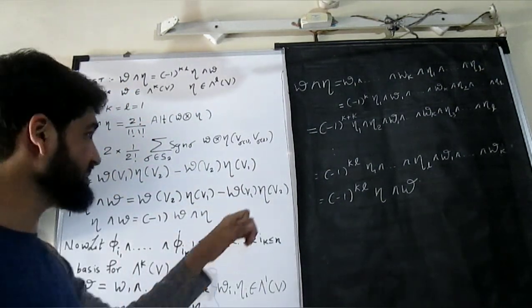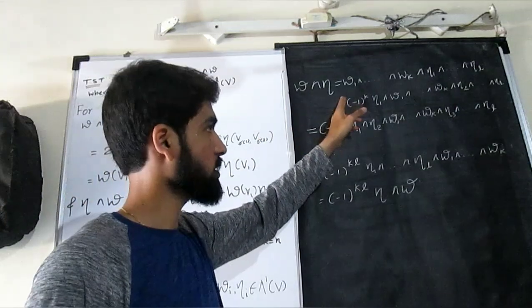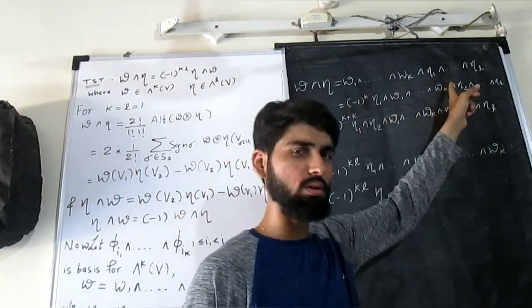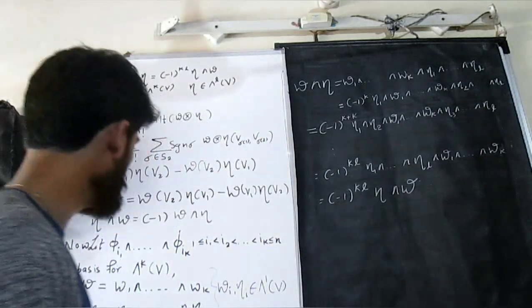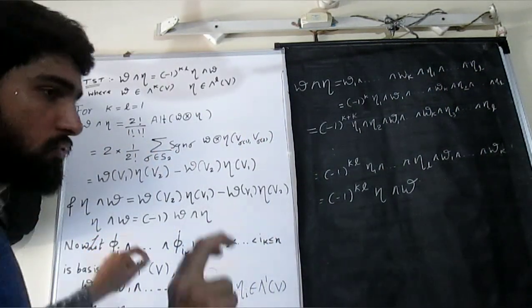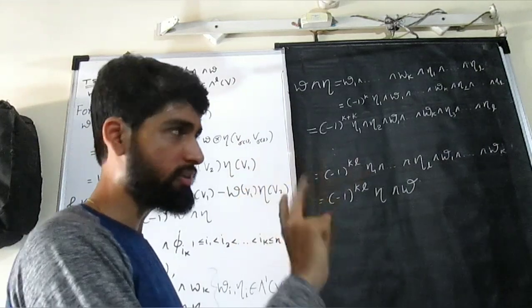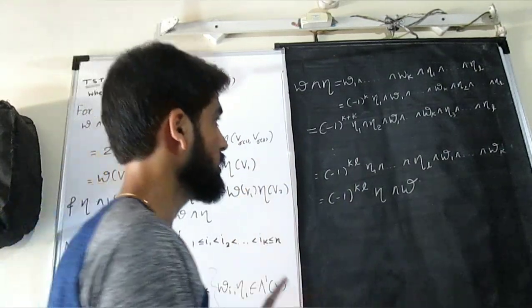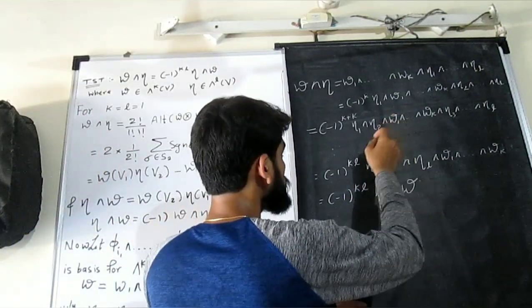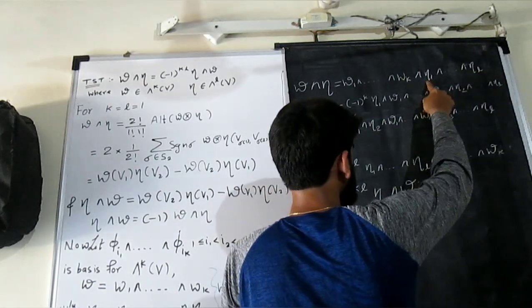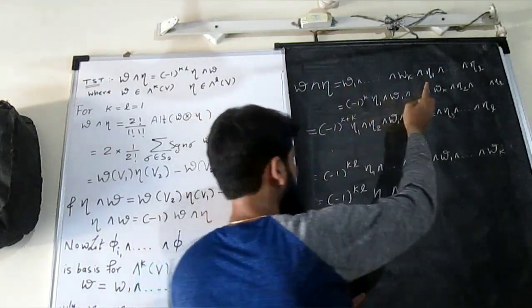You can see that omega wedge product with eta can be written as all of those wedge products together. Now by using this property, we know whenever we have one form and whenever we interchange, sign will change by one, minus one. So if I take this till this, that means I have to swap how many times? One, two, three, I have to swap k times.